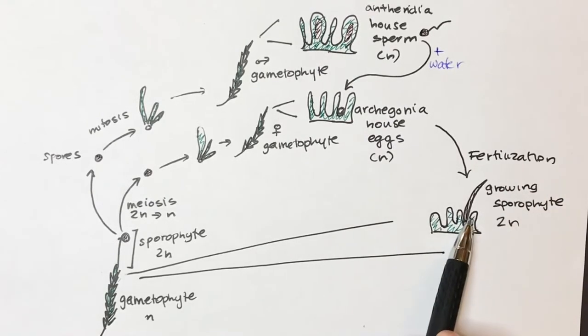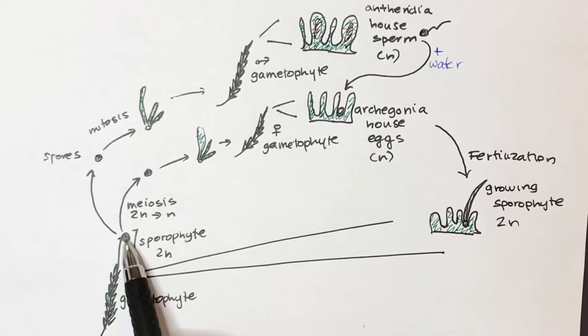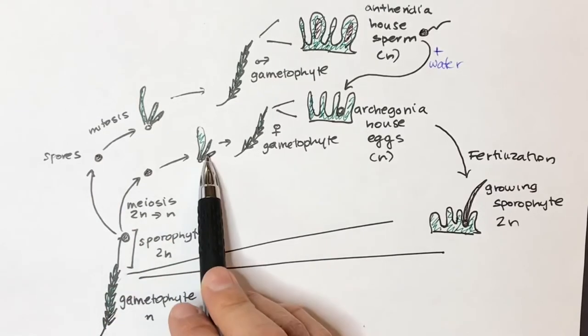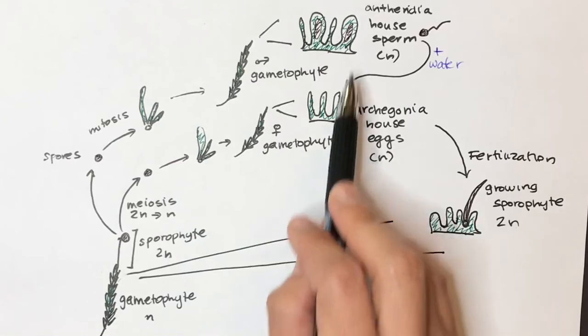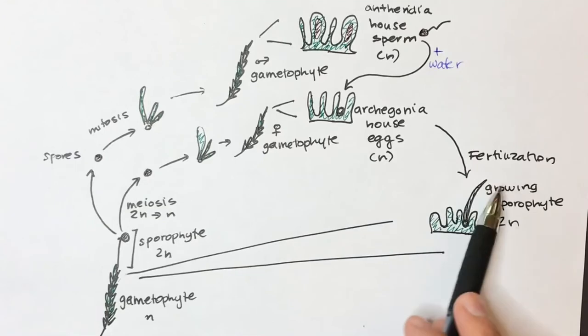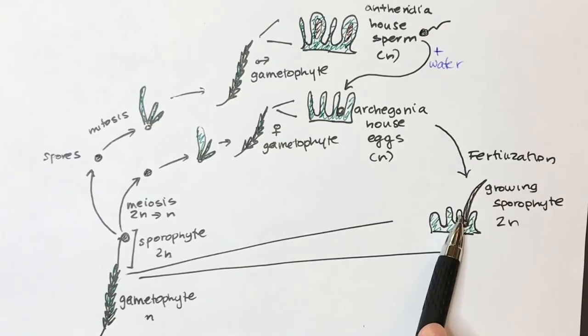The 2N sporophyte will undergo meiosis inside of its capsule when it's mature to produce haploid spores. The haploid spores will grow into haploid gametophytes. The haploid gametophytes make sperm or eggs, which are haploid cells, that will then undergo fertilization to make a new sporophyte.